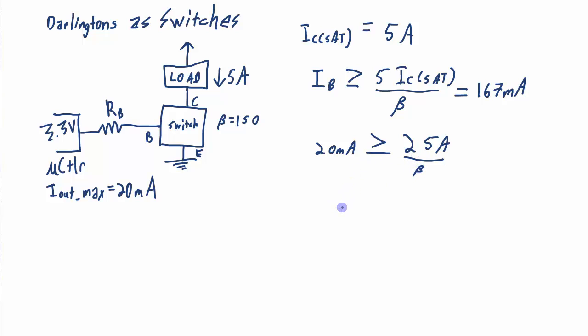And that means if I rearrange this equation, that means my beta needs to be greater than or equal to 25 amps over 20 milliamps, which is 1250. So I need a beta that's more than or at least equal to 1250. So really this is a large beta compared to a single NPN transistor.